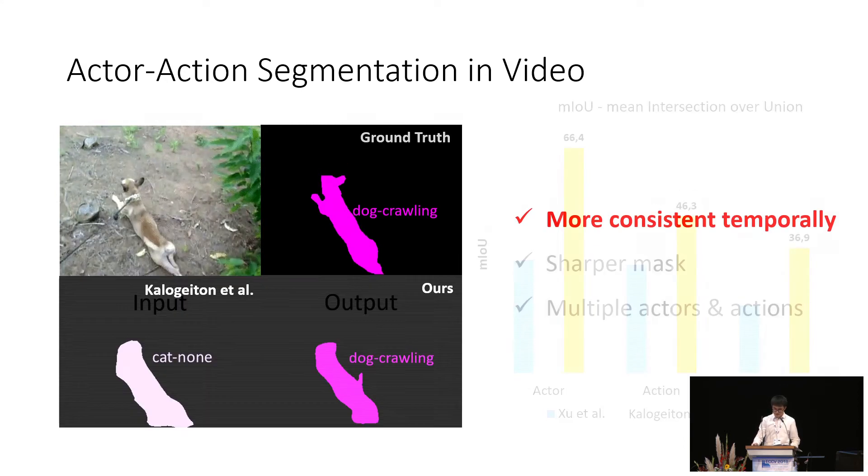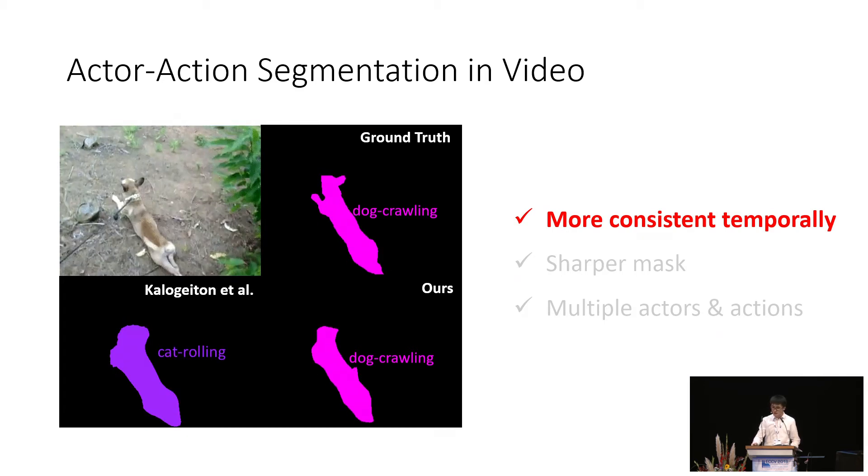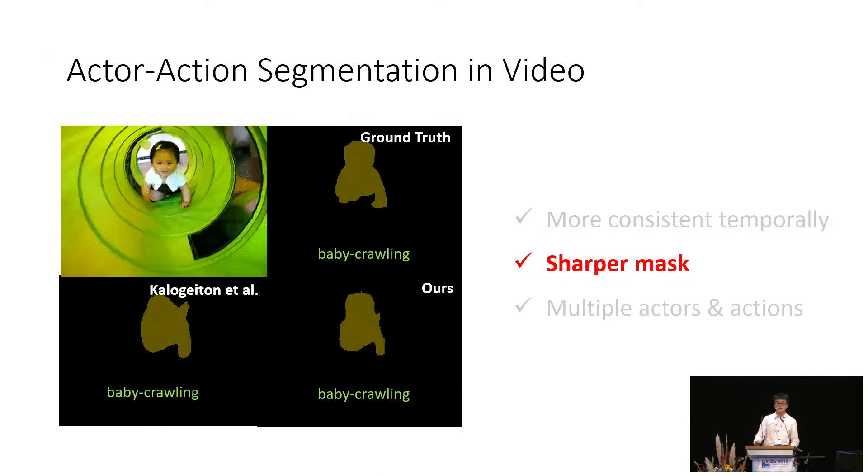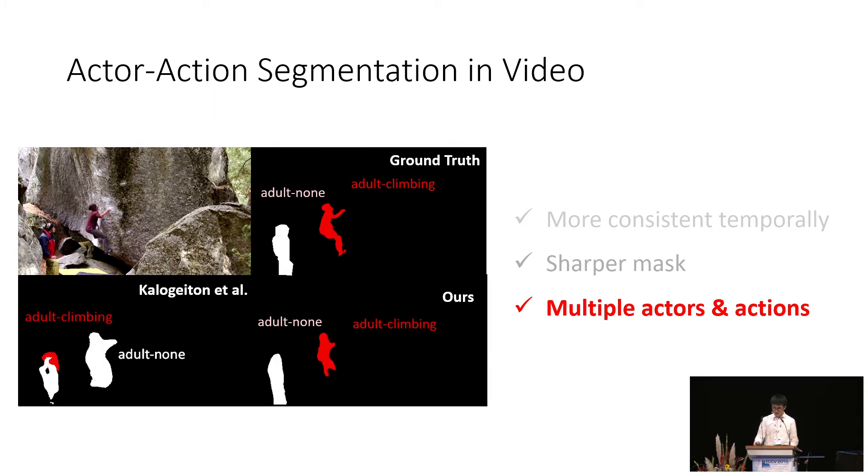Let's have a look at the qualitative results. Here's an example of dog agility. We compare our outputs against the ground truth and the previous state-of-the-art. We can see that the prediction of our model has better temporal consistency in both actor labels and action labels. Here's another example. Our model also generates sharper masks than prior work. And this is an example of multiple actors performing different actions. As we can see from the results, our model is also better at prediction in a more complicated scene.